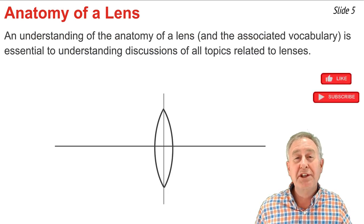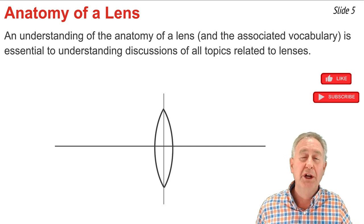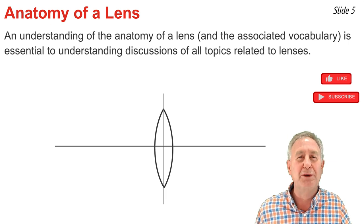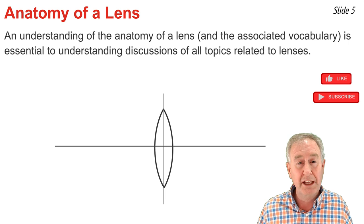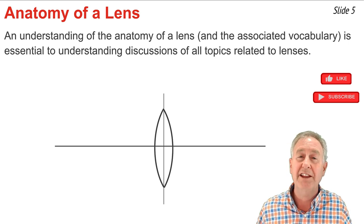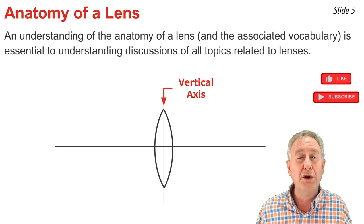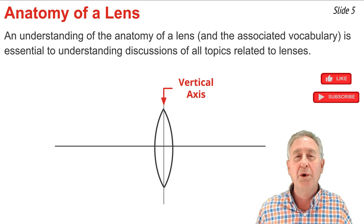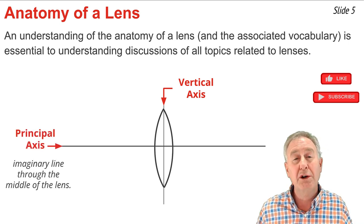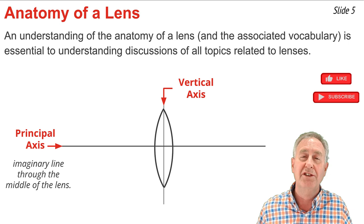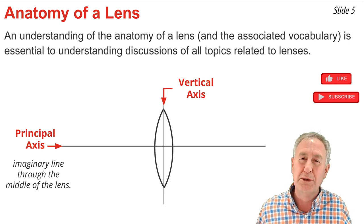An understanding of the basic structure of a lens and the vocabulary terms that go along with that structure will be essential to your understanding of future topics in this video tutorial series. Here we have a diagram of a converging lens. The vertical line that goes through the center of that lens is known as the vertical axis or the vertical plane. The horizontal line perpendicular to that vertical axis goes through the exact middle of the lens and is referred to as the principal axis, sometimes abbreviated as P-A.